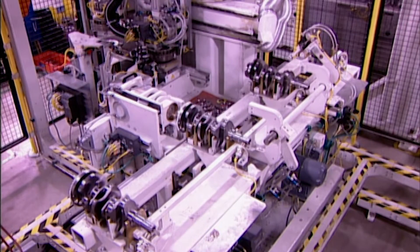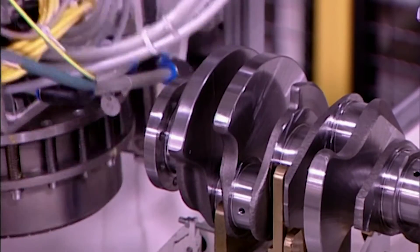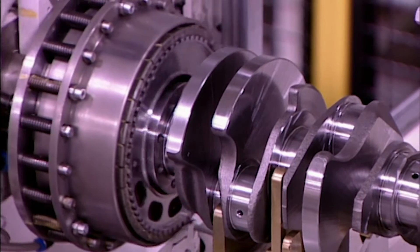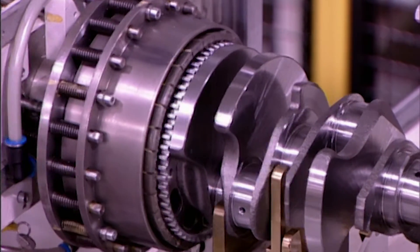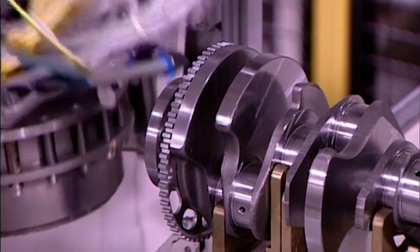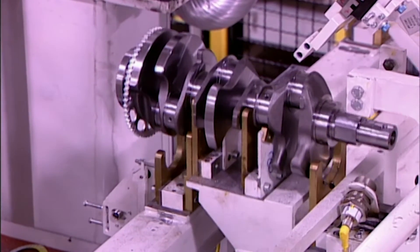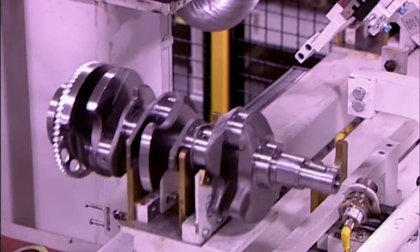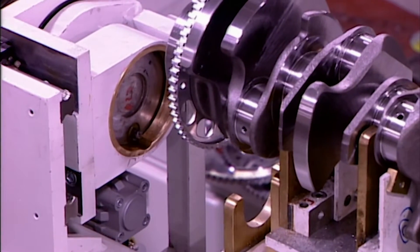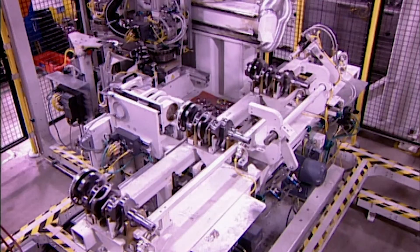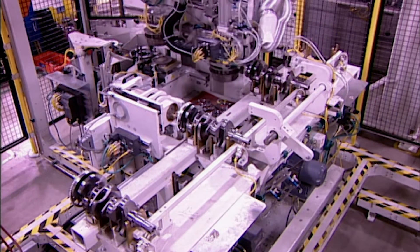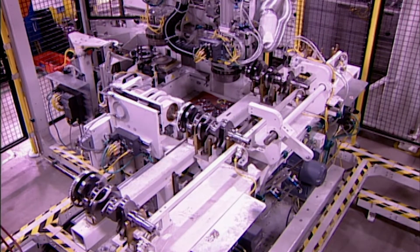Next, a steel disc with teeth called the Reluctoring is installed. It's heated and pressed onto the crankshaft. As it cools, it shrinks to a tight fit. This ring helps time the combustion cycle. As it spins, its teeth pass in front of a sensor, which reads the crankshaft's position and tells the engine to fire the spark plug at precisely the right moment.